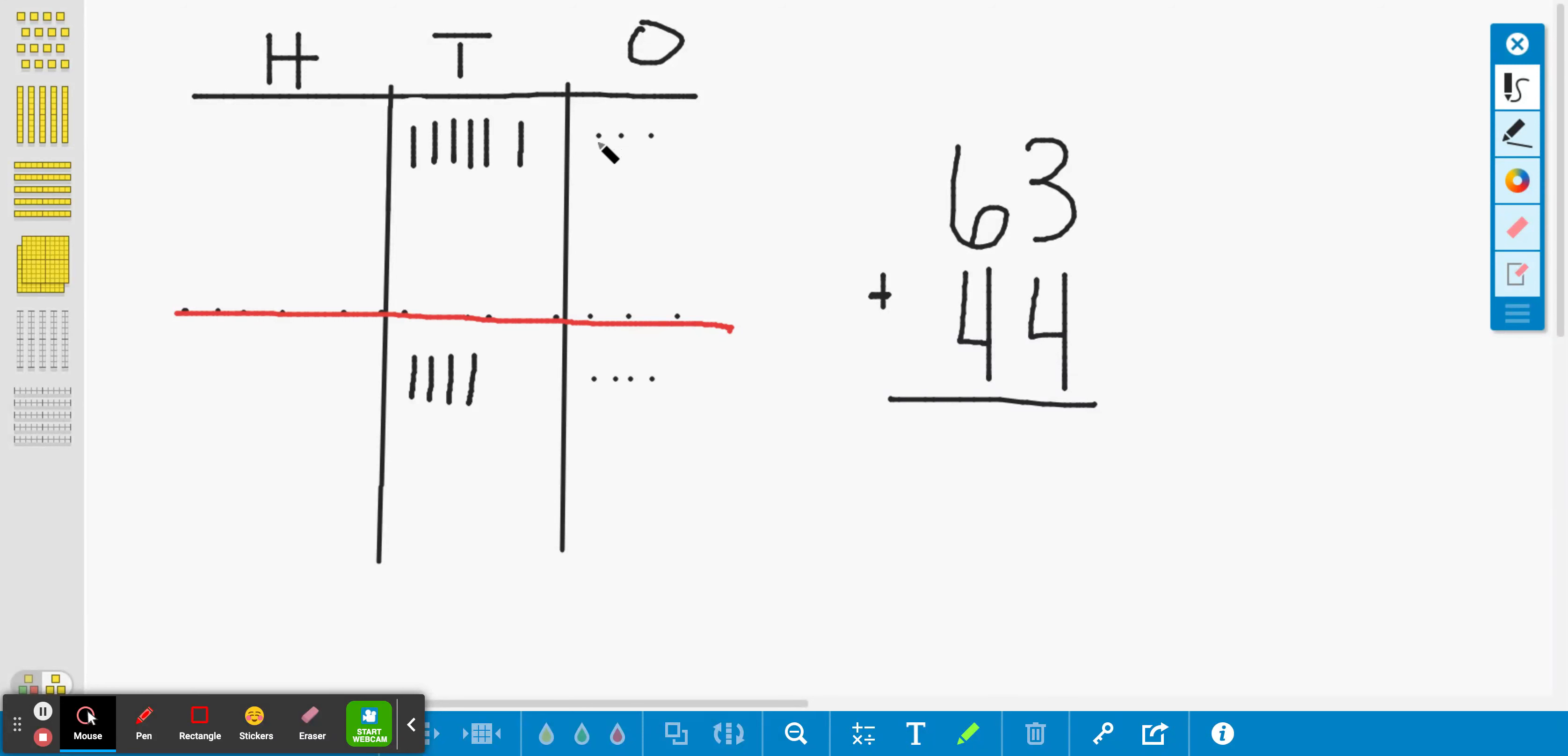And to check my work, I can go over here. I can go one, two, three. There's my three. Four, five, six, seven. Yeah, I have seven. And I notice that I don't have enough to make a new ten. So I just need to write seven under here.